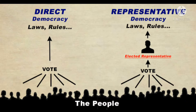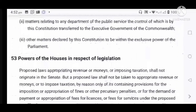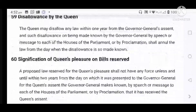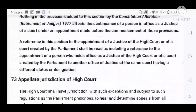How can we change Australia to a direct democracy? Theoretically, it would be possible to change Australia to a direct democracy by having numerous referendums to change the multiple parts of the Constitution.